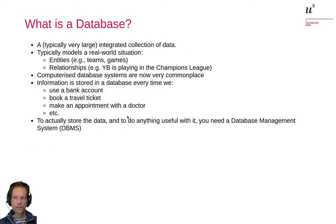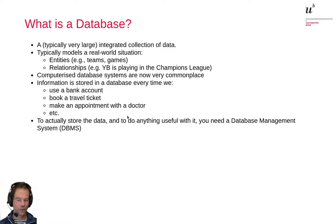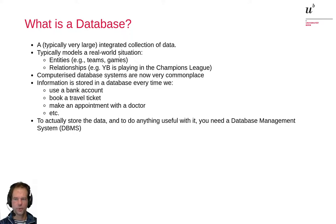So what is a database? Typically it's a very large integrated collection of data. By integrated, it means you are not just collecting a list of things, but most of the time a more complex data structure that should be represented and accessible from your database tools. It typically models real-world situations. We have entities — for example, in football you have different teams and different games or leagues where teams play against each other. Then you have relationships between these entities. The entities would be the teams and the different games, probably also locations. The relationship could be that Young Boys are playing in the Champions League.